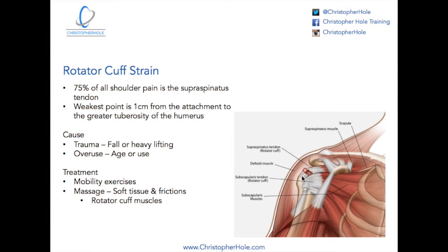It attaches there and this first centimeter is the weakest point — this is where the tears normally happen. There are a couple of causes: one is traumatic, so that's a fall or a heavy lift — one initial impact that causes the injury.